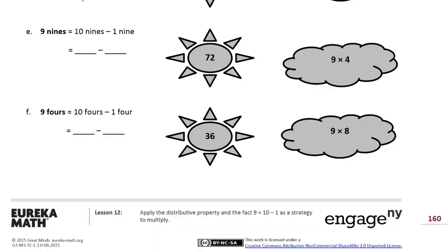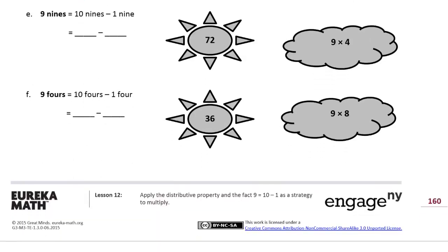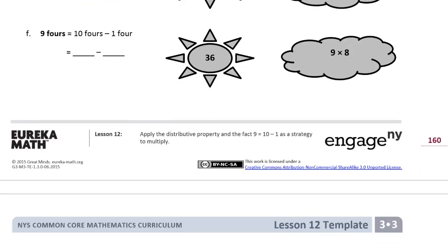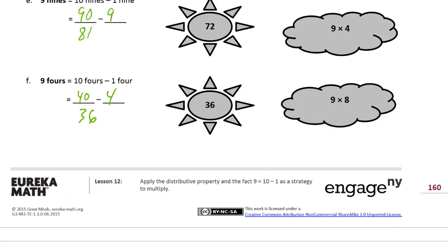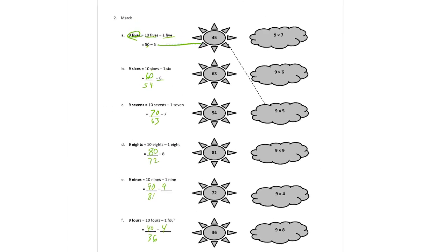Nine 9s is the same as ten 9s minus a 9. Ten 9s is 90, and one 9 is 9, so that's 81. Then we have nine 4s: nine 4s is ten 4s minus a 4 — it's one less than ten 4s. Ten 4s is 40, minus one 4 which is minus 4, so 40 minus 4 equals 36. Now we'll zoom out and figure out where all of these match up.